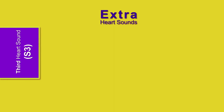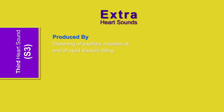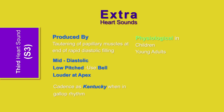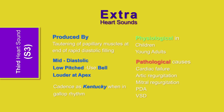S3 is produced by tautening of the papillary muscles at the end of rapid diastolic filling. It is also called the sound of distress because it is heard in conditions causing increased preload. As this is a low-pitched sound, it is best heard with the bell of a stethoscope. It is heard in mid-diastole and is louder at the cardiac apex. Its cadence is 'Kentucky' during gallop rhythm. S3 can be normal in children and young adults. Diseases in which S3 is audible include cardiac failure, aortic valve insufficiency, mitral regurgitation, patent ductus arteriosus, and VSD.